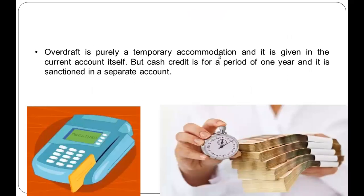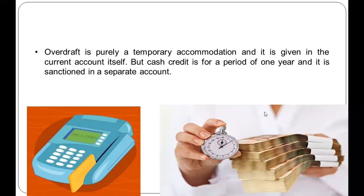Overdraft is a purely temporary accommodation given in the current account itself — if you have a current account, you can avail this facility. Cash credit, on the other hand, is for a period of one year and requires a separate account. If you take cash credit from an organization, it is for one year and operates through a dedicated separate account, from which you can avail this specific facility.